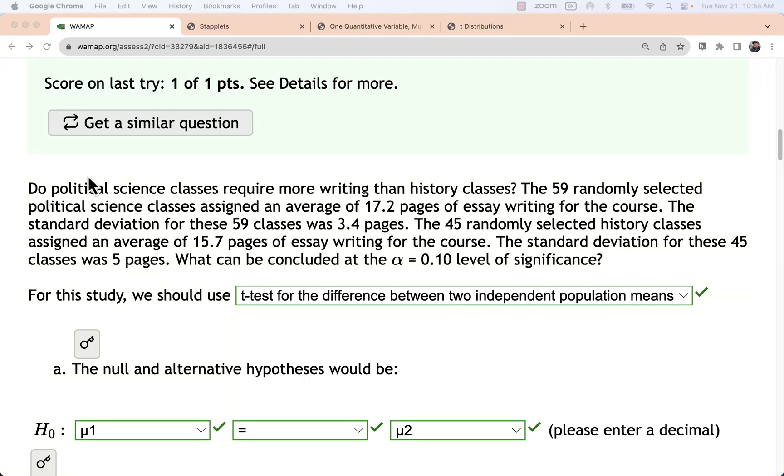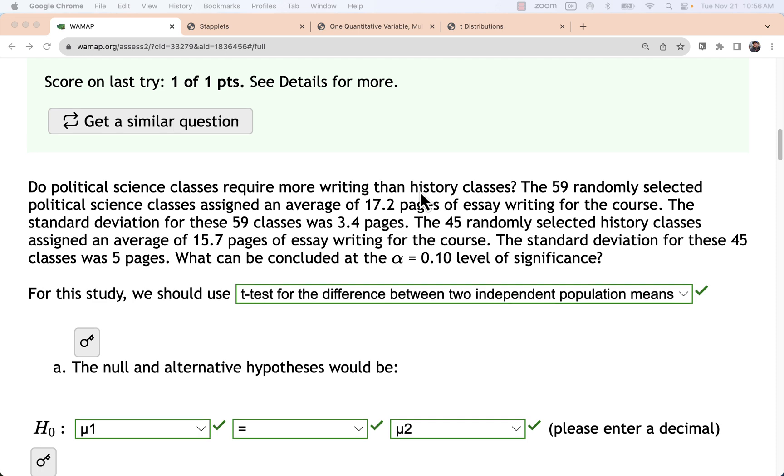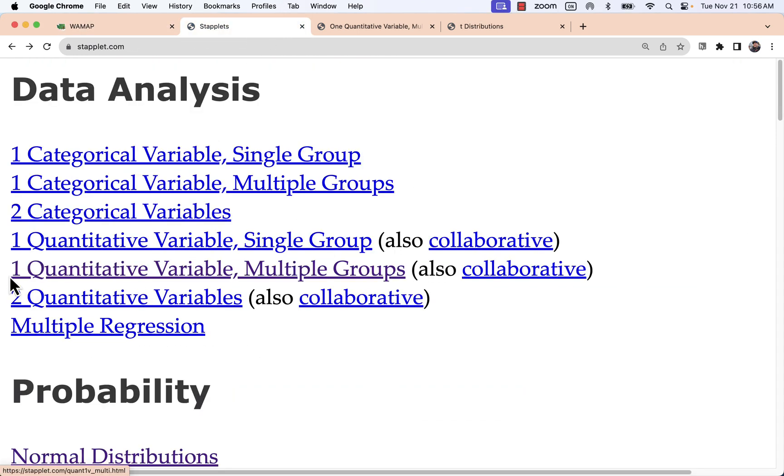This is a statistics problem where we're conducting a hypothesis test about the difference between two independent population means. These are independent in that we're not trying to check if there's any association between the two. We're looking at political science, a bunch of assignments that involved essays with writing, comparing that to the same type of thing for history to see how that number of pages of writing compares on average. So this is a quantitative test. We're going to look at one quantitative variable, multiple groups.